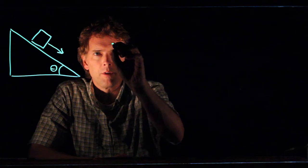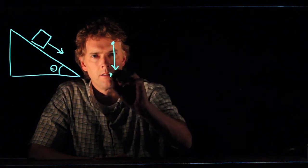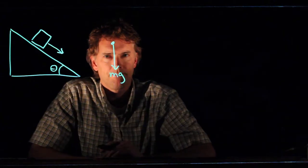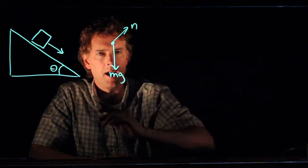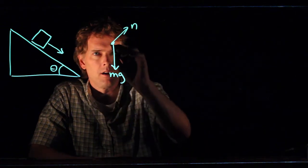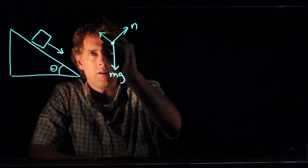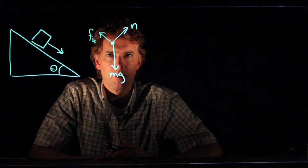Well, if we go to a free body diagram, we always draw gravity straight down. There is of course a normal force in this picture, n, which is perpendicular to the surface. And if it is sliding down the plane, then there is some kinetic frictional force back up the plane.